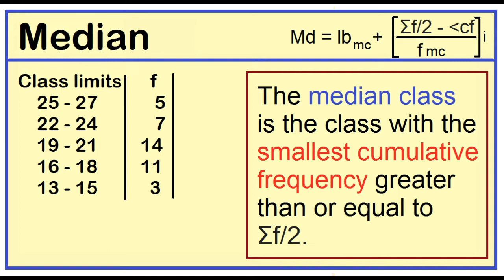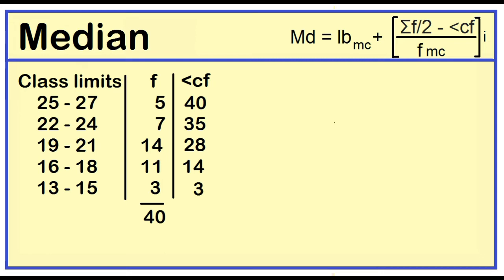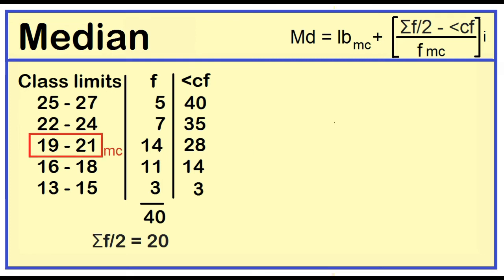Let's add a column for the less-than cumulative frequency. Copy the frequency of the lowest class interval, then add the frequencies successively. The lowest class interval is 13 to 15 and the frequency is 3. Then: 3 plus 11 is 14, 14 plus 14 is 28, 28 plus 7 is 35, 35 plus 5 is 40. The total frequency is 40, and one-half of 40 is 20. The smallest cumulative frequency greater than or equal to 20 is 28.